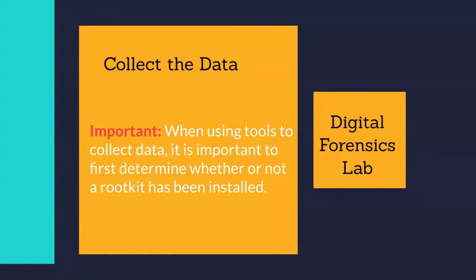When acquiring data over a network, you need to consider the type of data to be collected and the amount of effort to use. Consider what data you need to obtain that would support the prosecution of the offending parties. For example, it might be necessary to acquire data from several computers through different network connections, or it might be sufficient to copy a logical volume from just one computer.